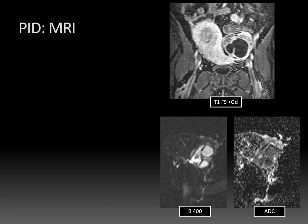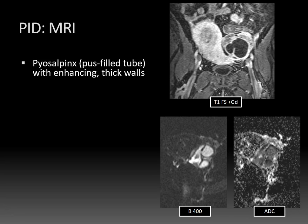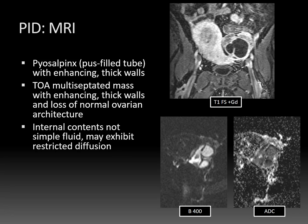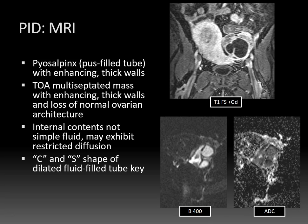This is the appearance of pelvic inflammatory disease on MRI. A pyosalpinx, which is a pus-filled tube, has enhancing thickened walls. A tubovarian abscess usually appears as a multiseptated mass with enhancing thick walls and loss of normal ovarian architecture. These often coexist. The internal contents may not be simple fluid, and they may have restricted diffusion, just like abscess elsewhere on MRI of the brain or liver. The C and S shape of a dilated fluid-filled tube is a key finding that allows you to differentiate this from an ovarian neoplasm. Surrounding inflammatory fluid is another helpful diagnostic clue.